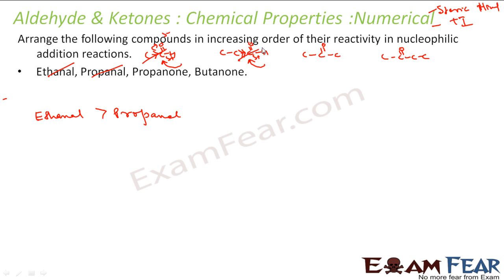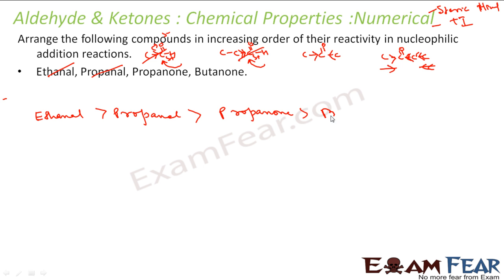Between propanone and butanone: by steric hindrance, propanone has two methyl groups on both sides while butanone has an ethyl and a methyl group, making butanone more sterically hindered. By the +I effect, butanone has greater electron donation from the ethyl group, making its carbonyl carbon less positive and less reactive. So the increasing order of nucleophilic addition reactivity is: butanone < propanone < propanal < ethanal.